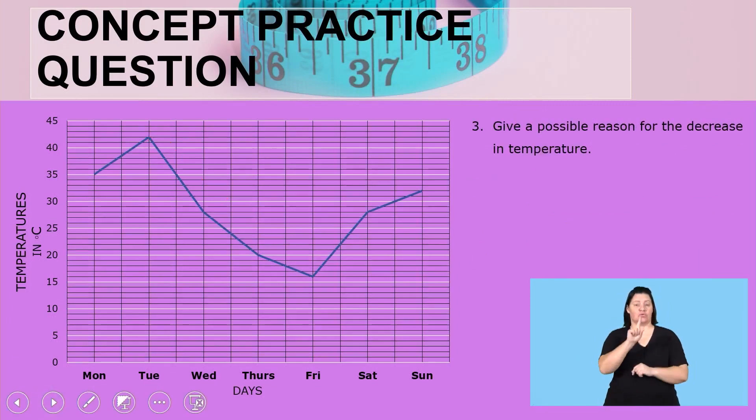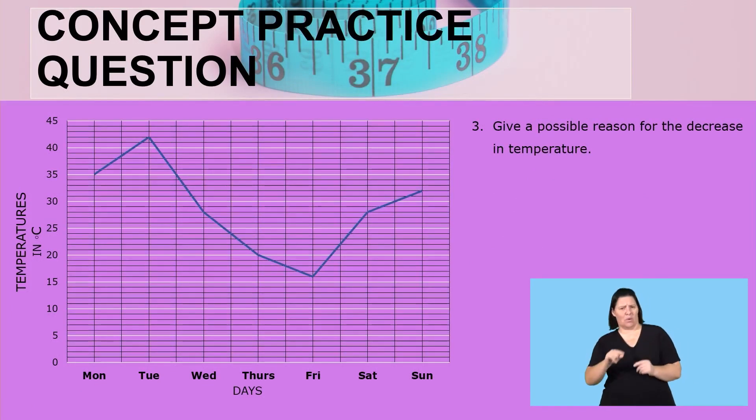The next question: give a possible reason for the decrease in temperature. The possible reasons might be that there was a cold front or due to rainfall. There are many possible reasons, but make sure that the reasons you give are relevant and applicable to the context. When there is a cold front or when rain is falling, the temperatures are decreasing. Those might be the possible reasons.